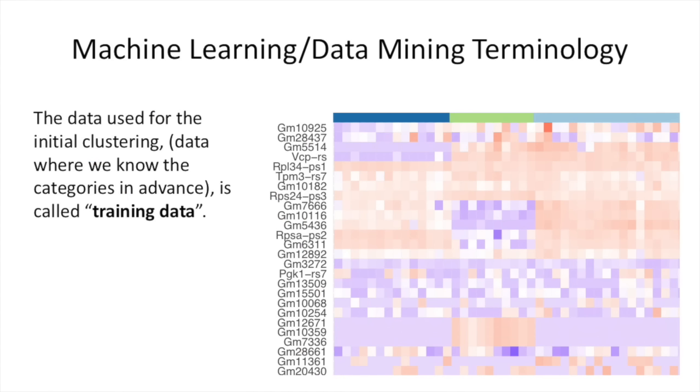Before we go, let's talk about a little machine learning slash data mining terminology. The data used for the initial clustering, the data where we know the categories in advance, is called training data. Bam!